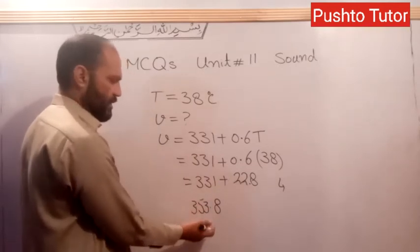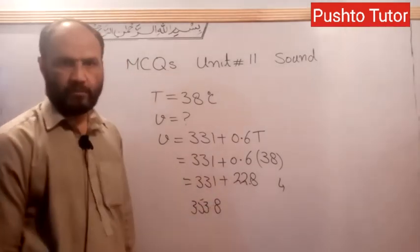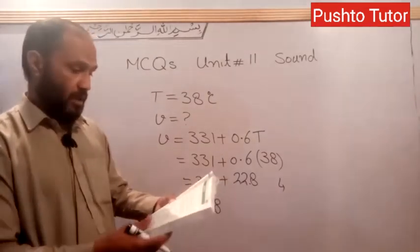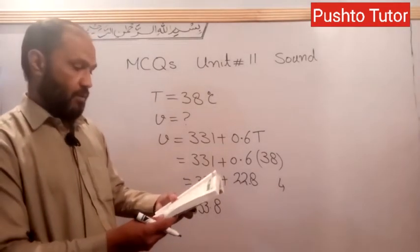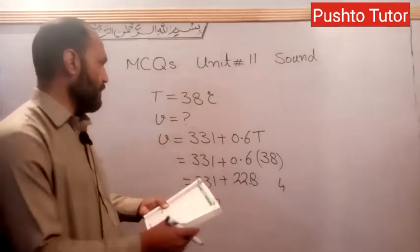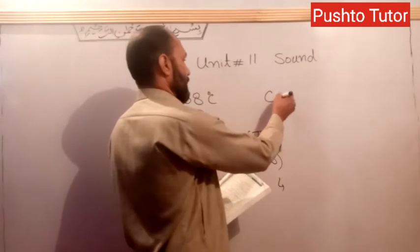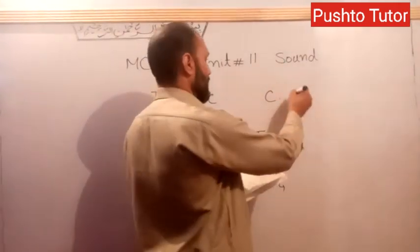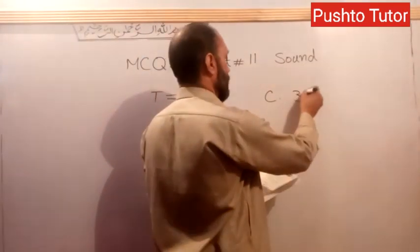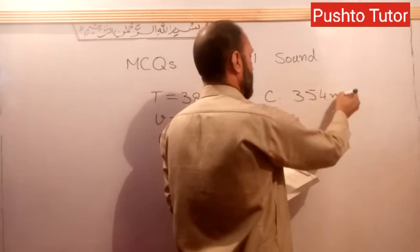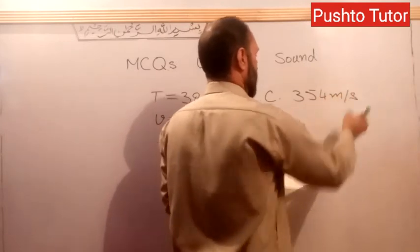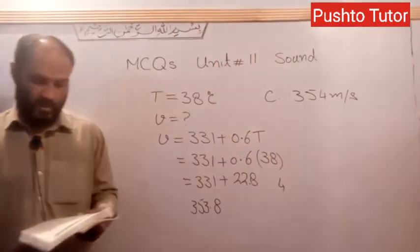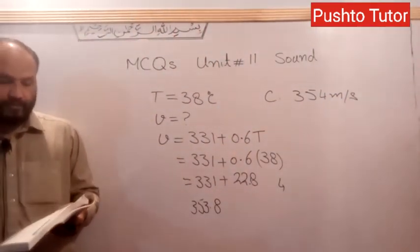The calculation gives approximately 335 or 345, approximately 345. The answer is C: 354 meters per second. The data approximation gives this result.